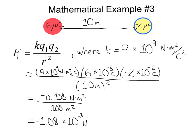Now this negative sign just represents that this is an attractive force between the positive 6 microcoulombs and the negative 2 microcoulombs. You could also see if both these charges were positive, I'd get a positive force. If they were both negative charges, I would also get a positive force, and that would be a repulsive force.